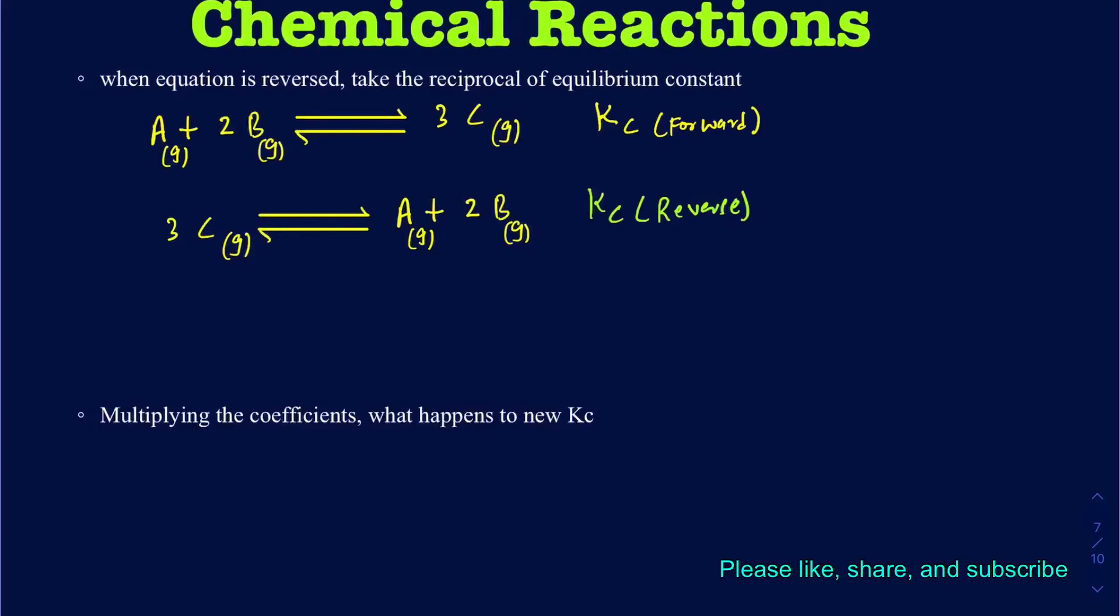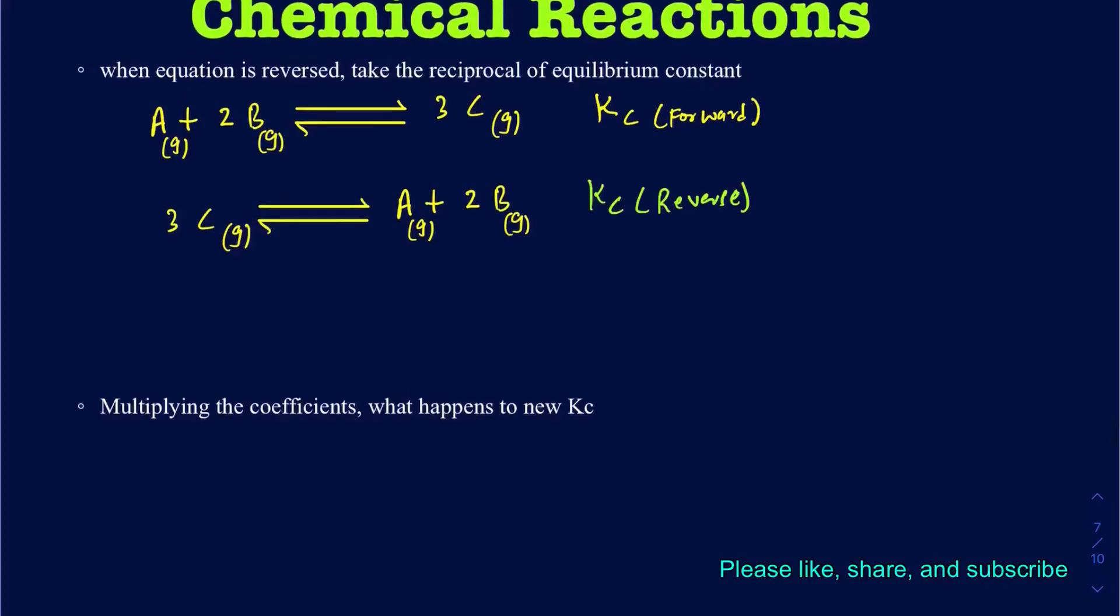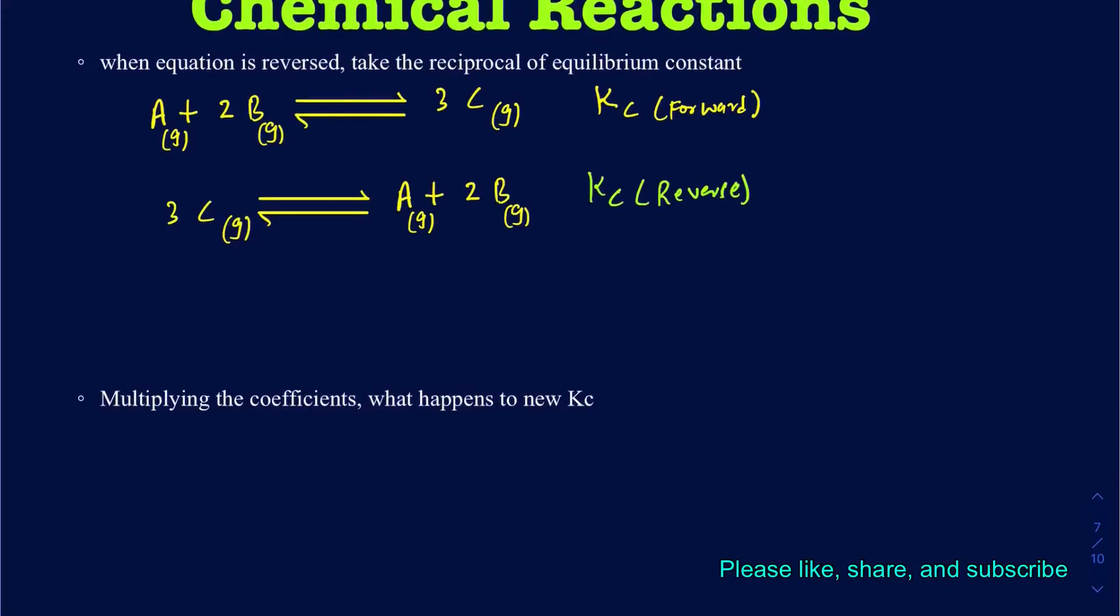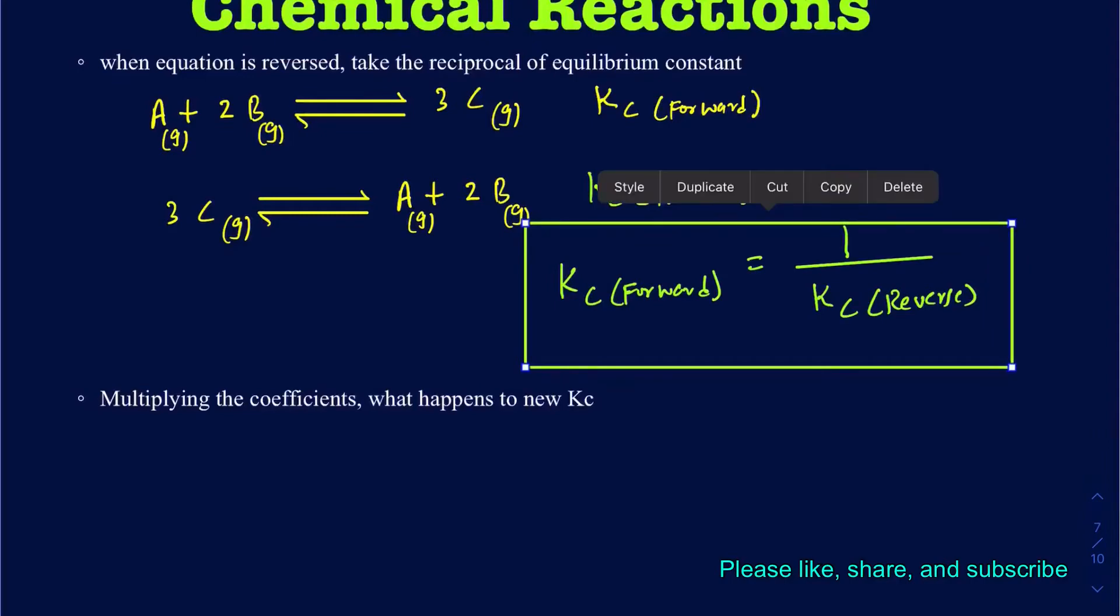And obviously you can go ahead and write down all these equilibrium constant expressions in terms of the reactants and products. But at the end of the day, what's going to happen, they are going to be reciprocal of one another. So another way of saying the Kc forward of a reaction is going to be relating with the Kc reverse of that particular equilibrium reaction by, they are going to be reciprocal of one another. So it's going to be Kc reverse. So anytime in a given question you are flipping the reaction and you wonder what the new equilibrium constant is going to be, all you really got to do is just take the reciprocal of the given equilibrium constant.